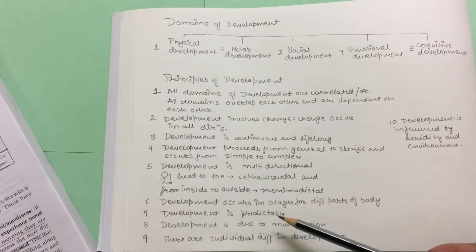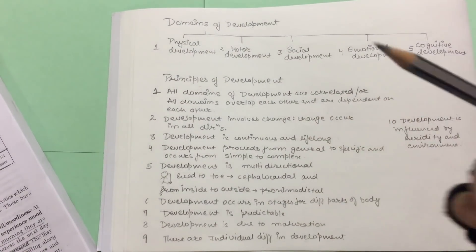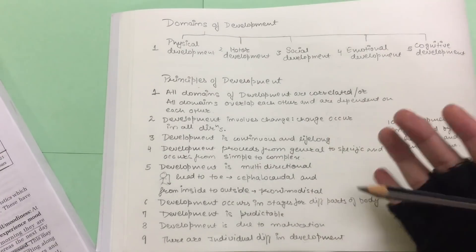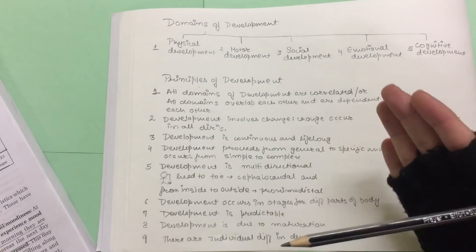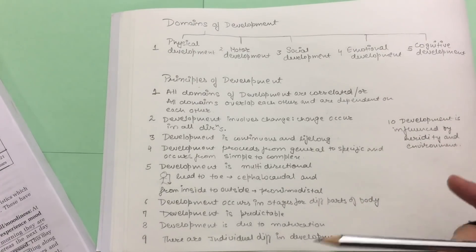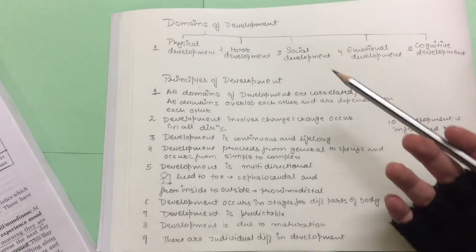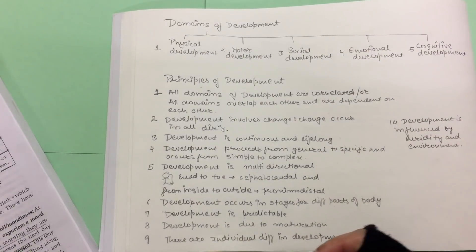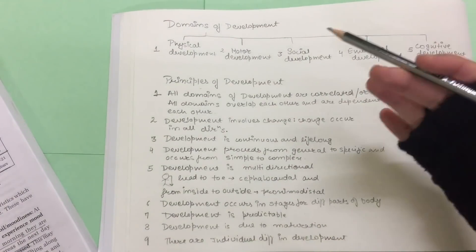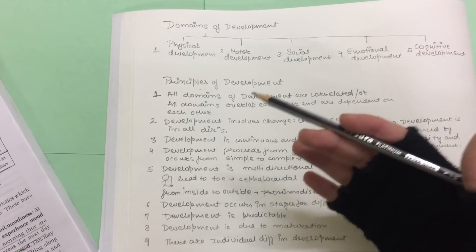The next principle is that development is predictable. For example, if you want to tell a child's weight at 2 years, the birth weight will be 4 times that figure. There are individual differences in development — every child has their own pace, and every child is different. Someone will learn quickly while another may take more time.